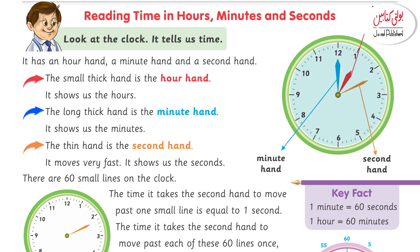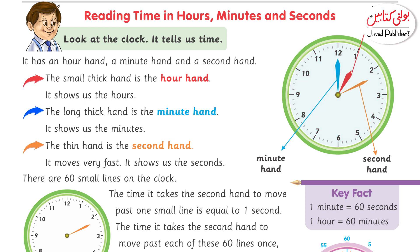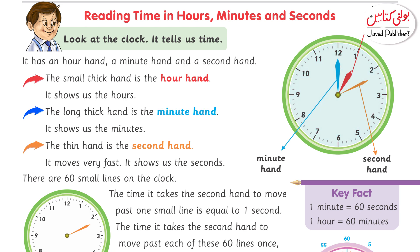Blue indicates the minute hand, red indicates the hour hand, and orange indicates the second hand. The smallest needle is the hour hand, and the biggest one is the minute hand. You will tell the students that 1 hour is equal to 60 minutes and 1 minute is equal to 60 seconds.